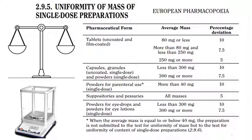For suppositories and pessaries, all masses have a percentage deviation limit of 5%. For powders for eye drops and powders for eye lotions, which are single dose preparations, those less than 300 mg have a 10% limit and those 300 mg or more have a 7.5% limit — very similar to the limits for capsules.